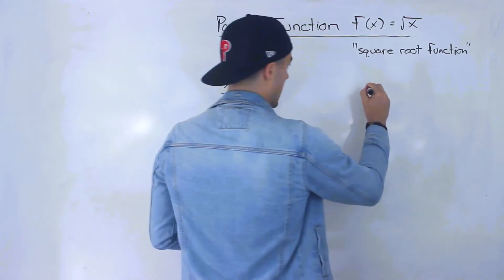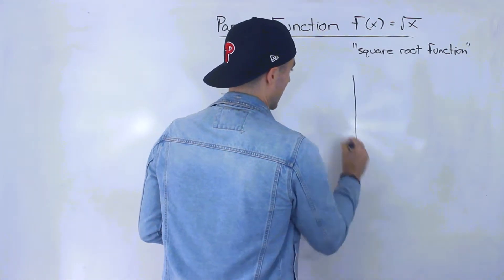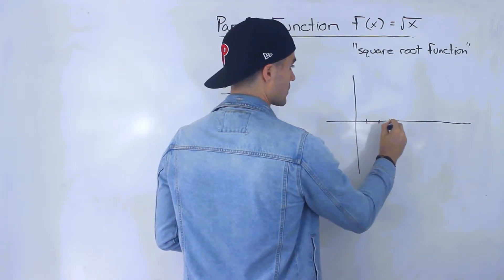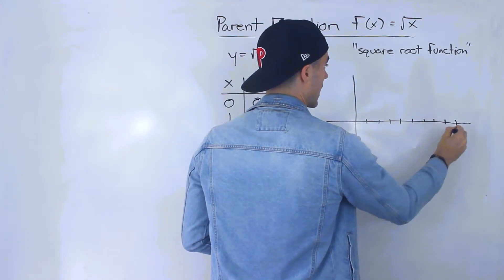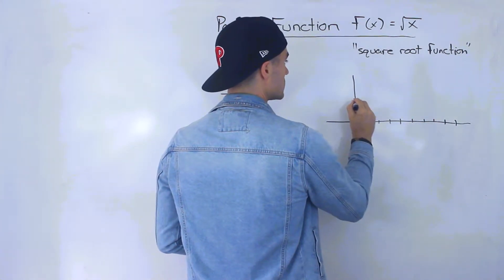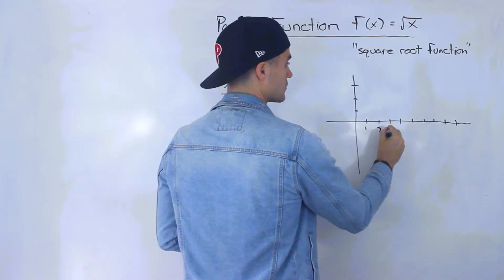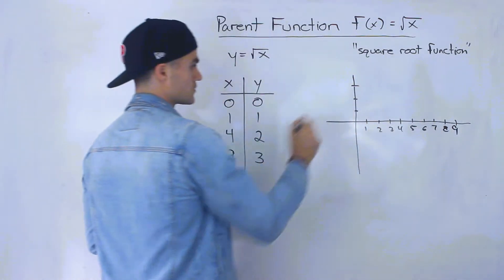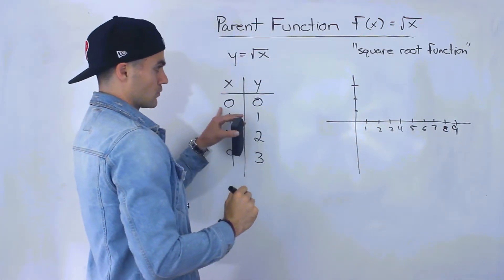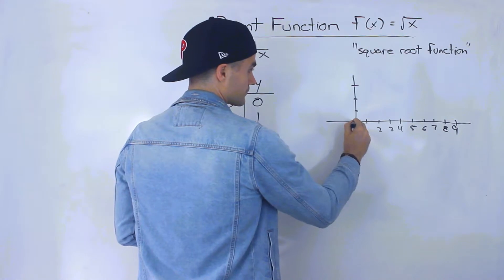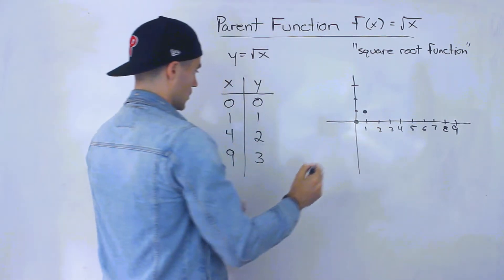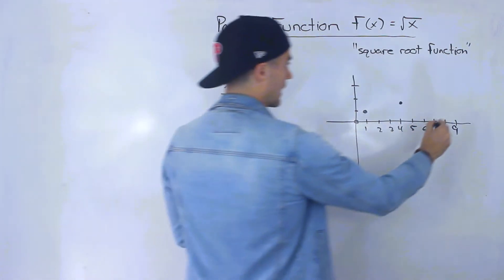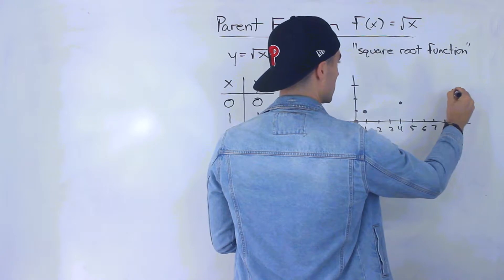So if we take these points and plot them, how's this going to look? So we're going to go all the way up to 9 on both axes. So we got 0 and 0, we got 1 and 1, we got 4 and 2 which is here, and then we got 9 and 3 which is going to be over here.